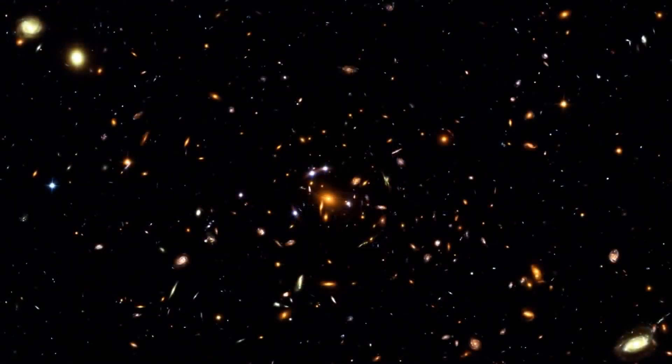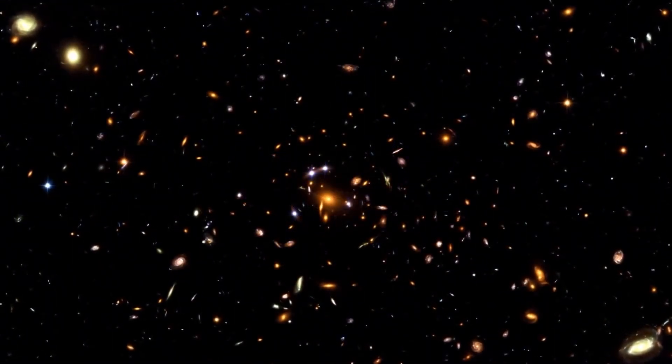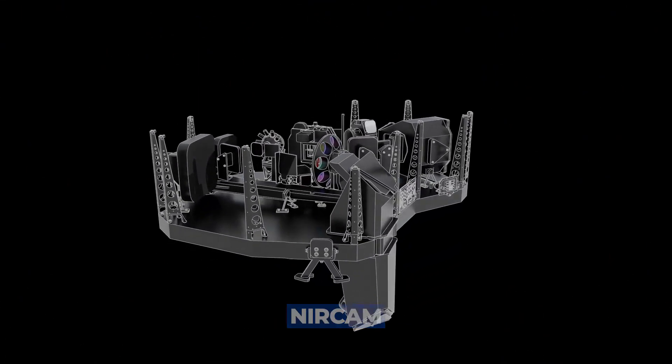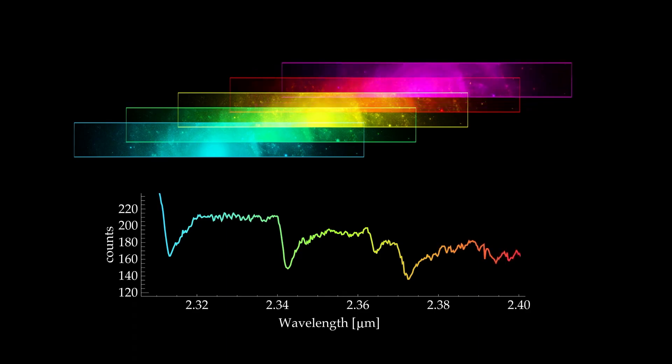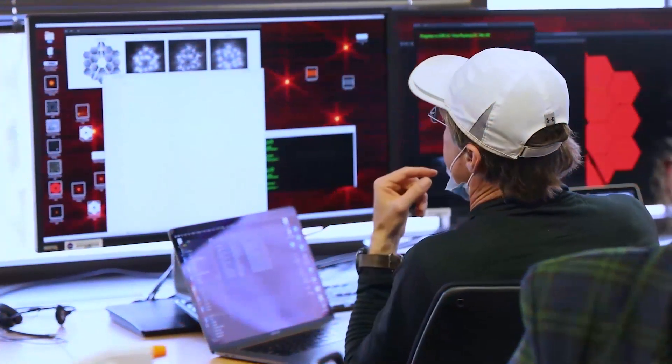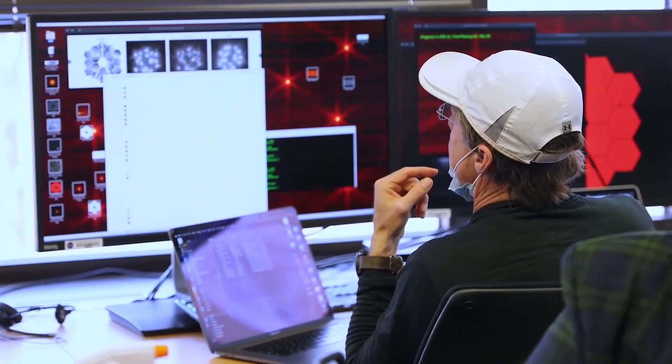The first deep view was taken by JWST's near-infrared camera, NIRCAM, and is a composite from images obtained at different wavelengths, totaling 12.5 hours of exposure time. But that was all the way back in July. What has changed since then?